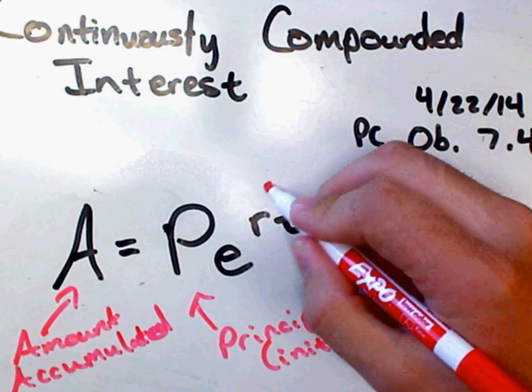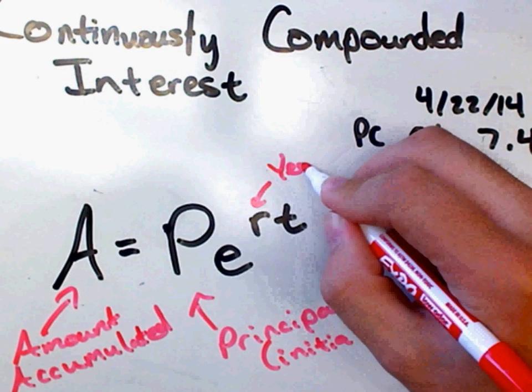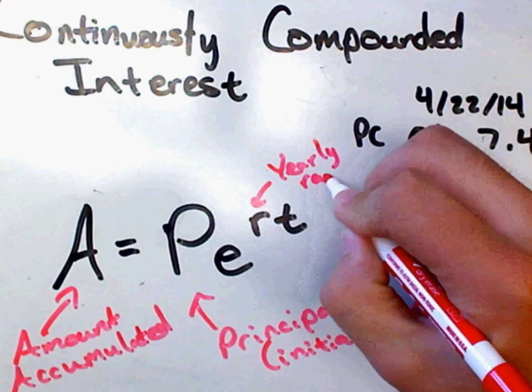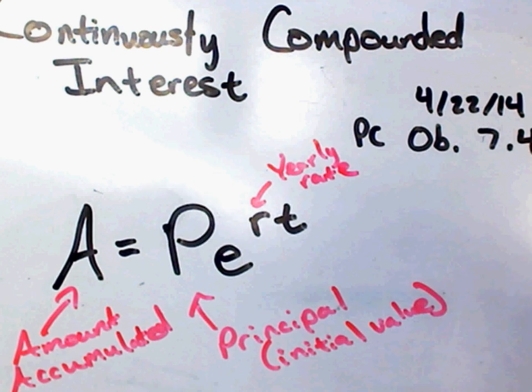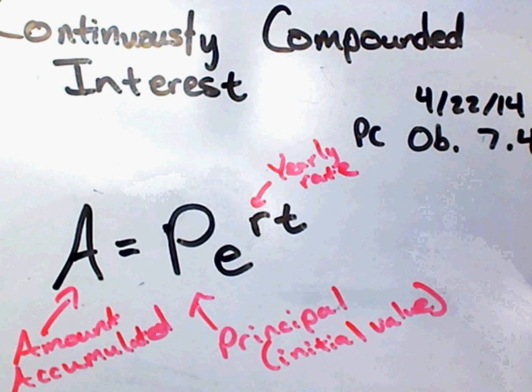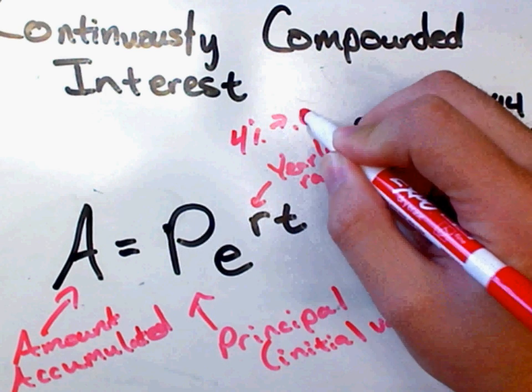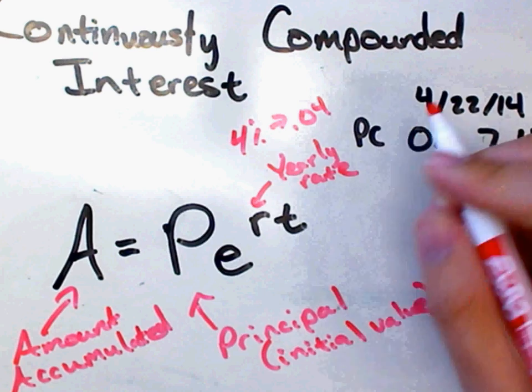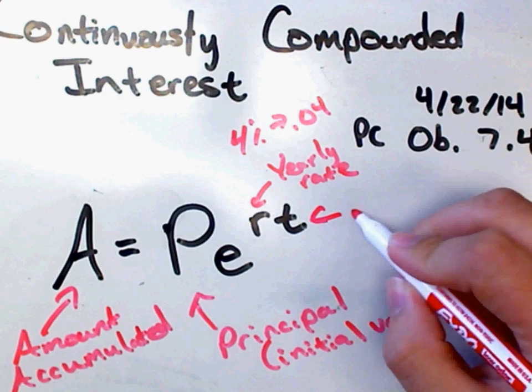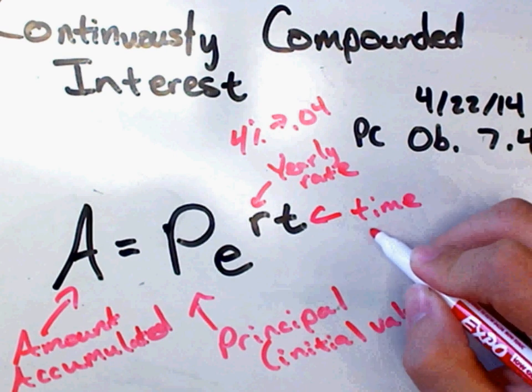So R is your yearly interest rate. It has to be in years. It will be as a decimal. For example, 4% would be .04. So that's the way you're going to calculate that. And then T is time elapsed in years.